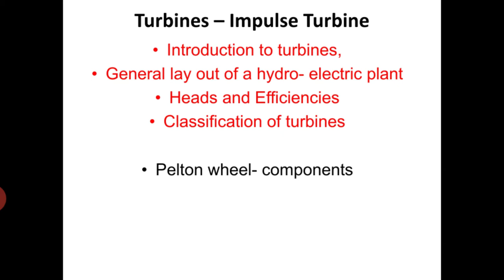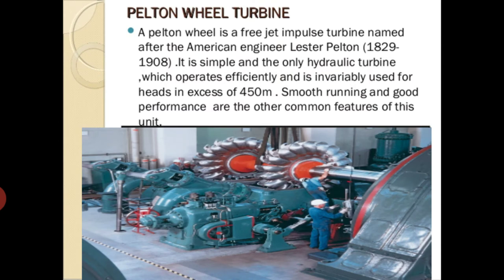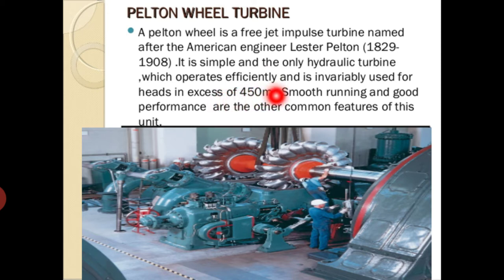In this particular session we will be discussing mainly about the Pelton wheel and its working principle, components, and velocity triangles. As we know, the Pelton wheel is a free jet impulse turbine. It is named after American engineer Lester Pelton and was invented between 1829 and 1908. This picture shows the Pelton wheel turbine.